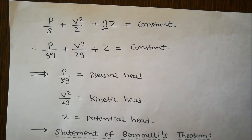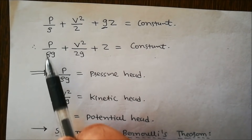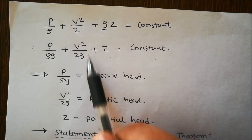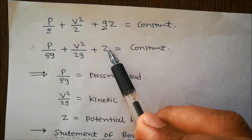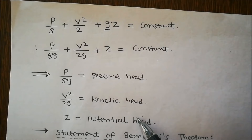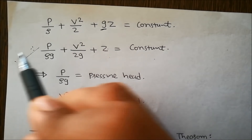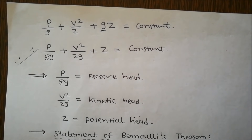Here P/(ρg) is the pressure head, V²/(2g) is the kinetic head, and z is the potential head. This equation is known as Bernoulli's equation.